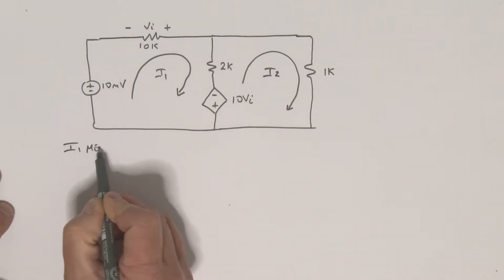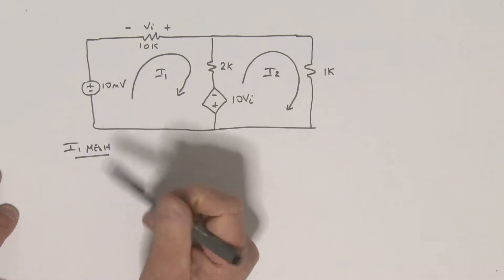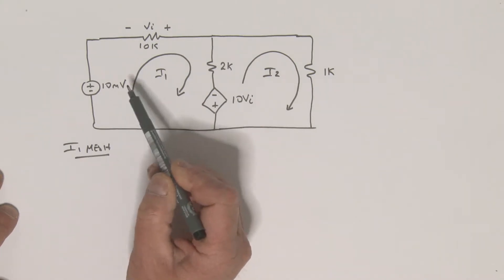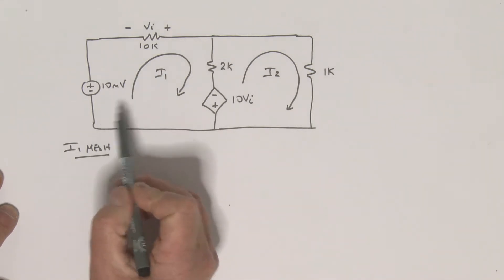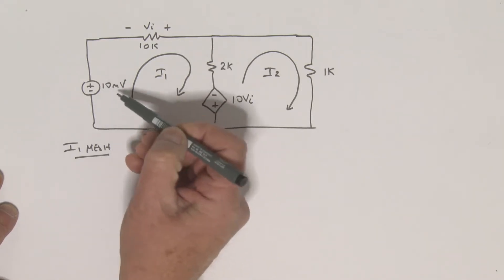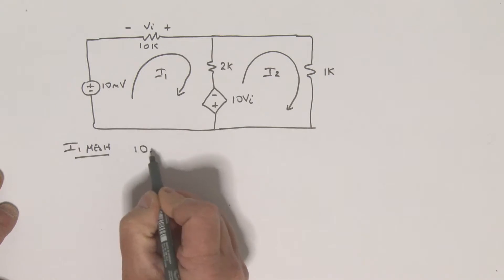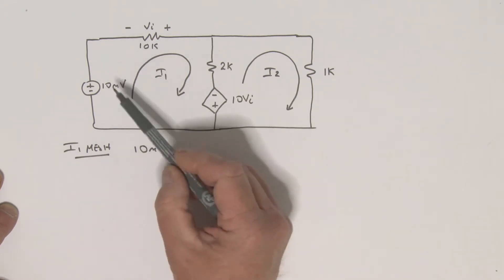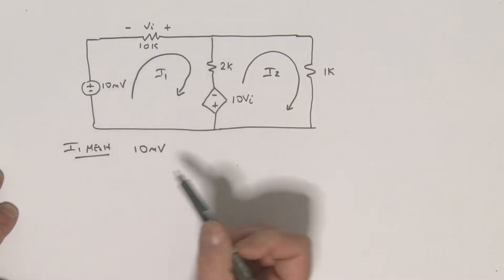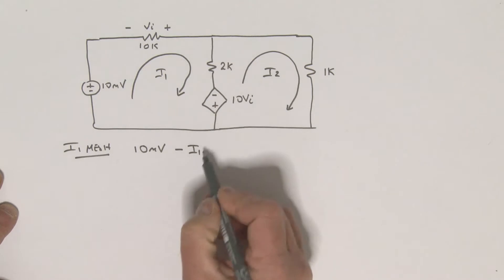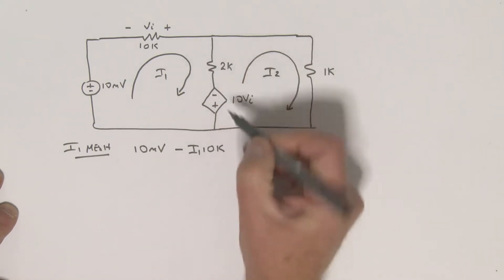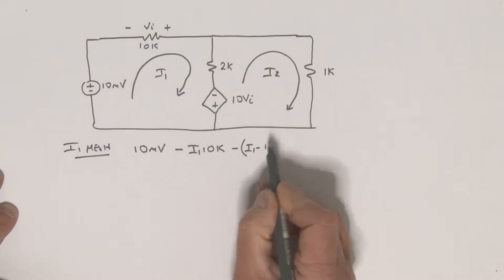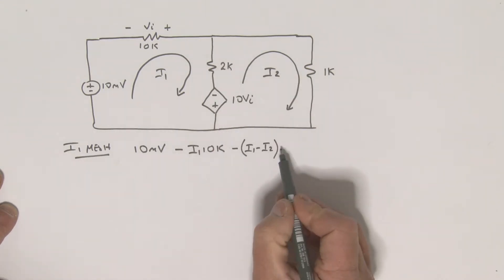For the i1 mesh, we're summing voltages. I'll use the convention that going up in voltage is positive and dropping in voltage is negative. Starting here, we have a 10 millivolt source — going from minus to plus, so that's +10 millivolts. Then we have i1 times 10k, which is a voltage drop, so that's −i1 × 10k. Coming down, this term is −(i1 − i2) × 2k, since i1 is the lead current.